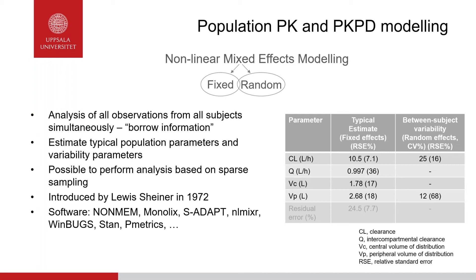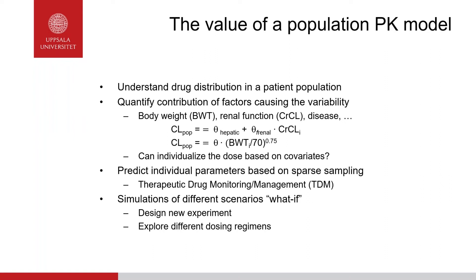A population PK model has several advantages: it provides understanding of drug distribution in the patient population; we can quantify the contribution of factors causing variability, such as renal function and body weight; we can predict individual parameters, for example of value for TDM; and importantly, we can apply the model to simulate different scenarios — for example to facilitate the design of new experiments and support the choice of a dosing regimen.